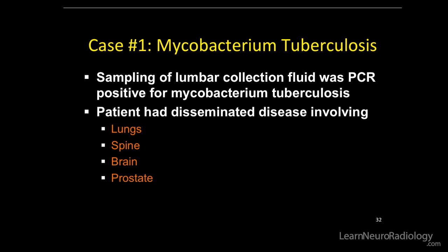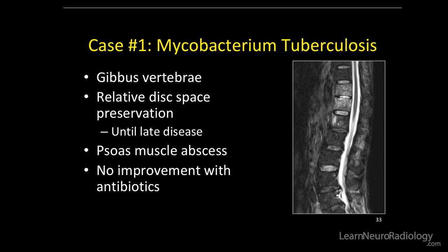This was a case of TB. The patient had sampling of the lumbar collection fluid — PCR positive. They also had disease involving the lungs, brain, and spine. With mycobacterium tuberculosis, look for the gibbous deformity, where there's increased kyphosis and vertebral body destruction. Early in the disease, TB usually spares the disc space until late, which is kind of the opposite of pyogenic discitis osteomyelitis.